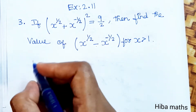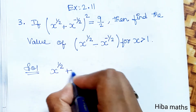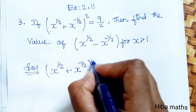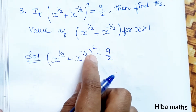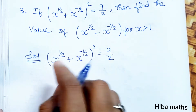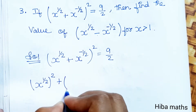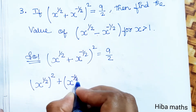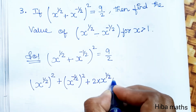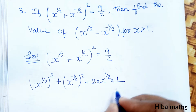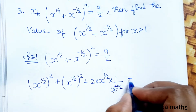So first we solve this value: x power 1 by 2 plus x power minus 1 by 2, whole square is equal to 9 by 2. Using the (a + b)² format, we expand: a squared, which is x^(1/2) squared, plus b squared, which is x^(-1/2) squared, plus 2 times a times b. Since b is the inverse, we get x power 1 by 2 times x power minus 1 by 2, which equals 1.